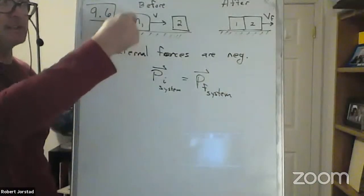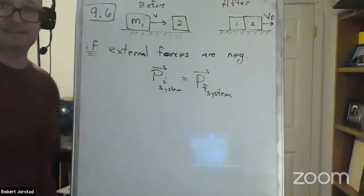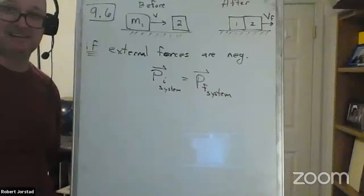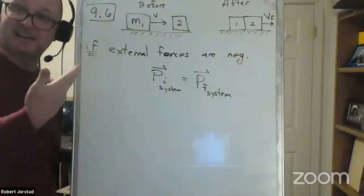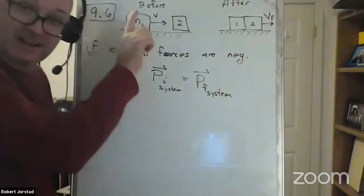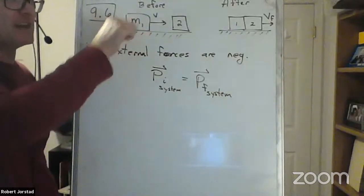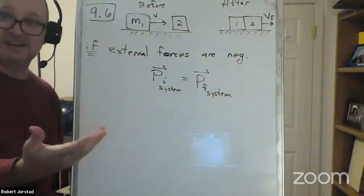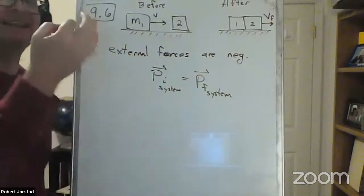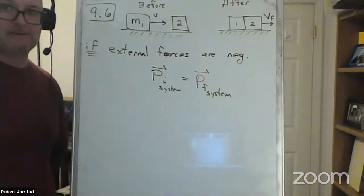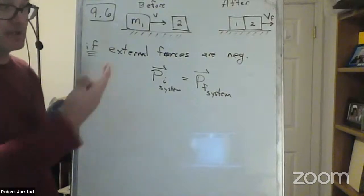Gravity is an external force pulling down on these blocks. Is it because it's perpendicular? No — it's because it's balanced by the normal force in this case. So the normal force is another external force. However, do you agree the up and down forces balance here? So there's no net external force. That's why it's okay.